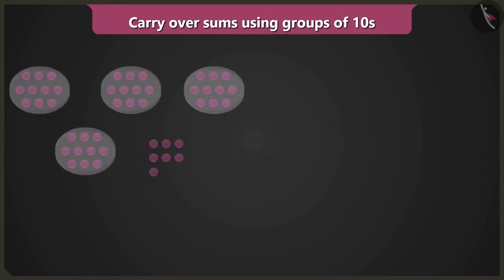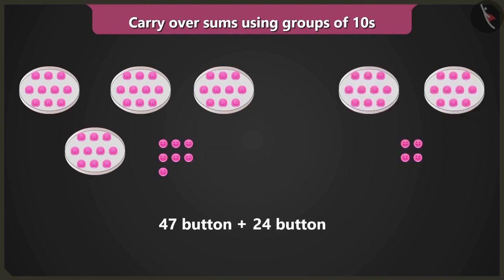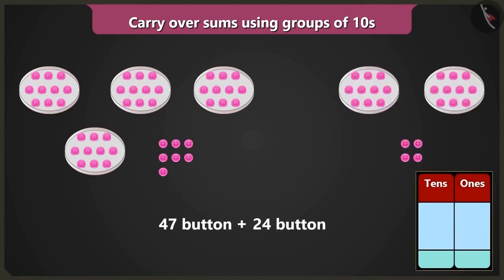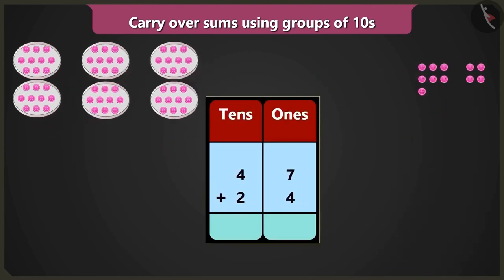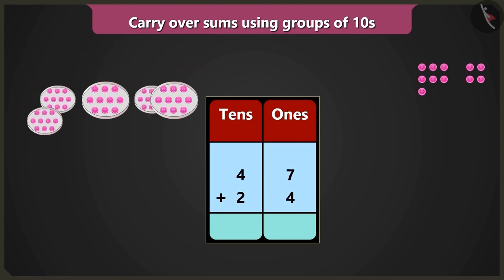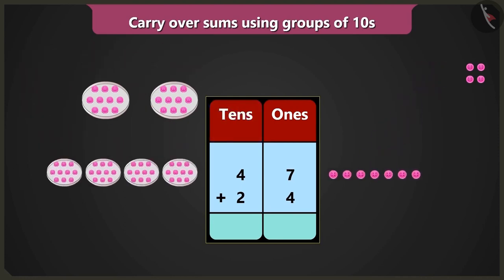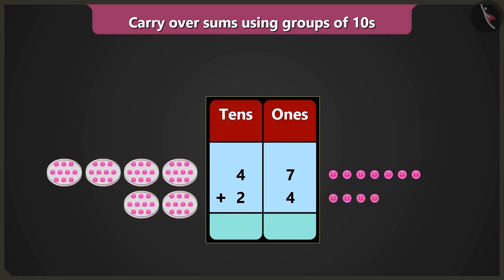Well done, Bubbly! Can you place 47 and 24 buttons in the table of 1s and 10s and then add them up? Yes, 47 buttons are 4 tens and 7 ones, so we will write 4 in the box of tens and 7 in the box of ones. And 24 buttons are 2 tens and 4 ones, so we will write 2 in the box of tens and 4 in the box of ones.